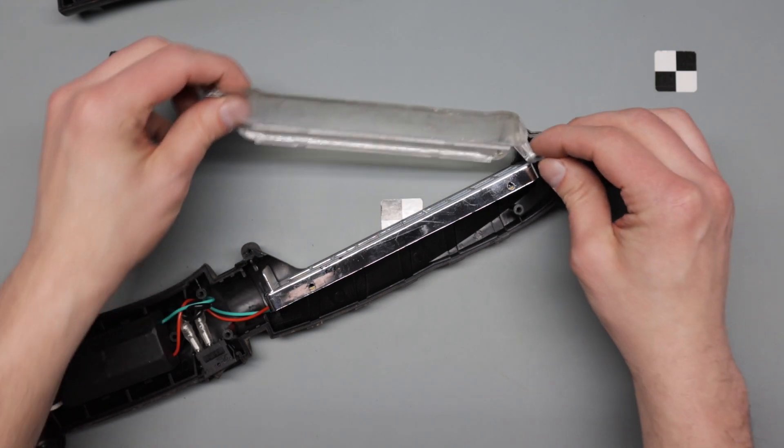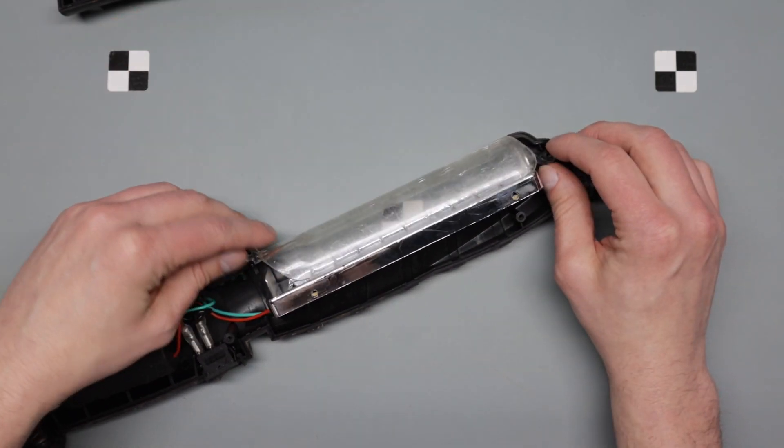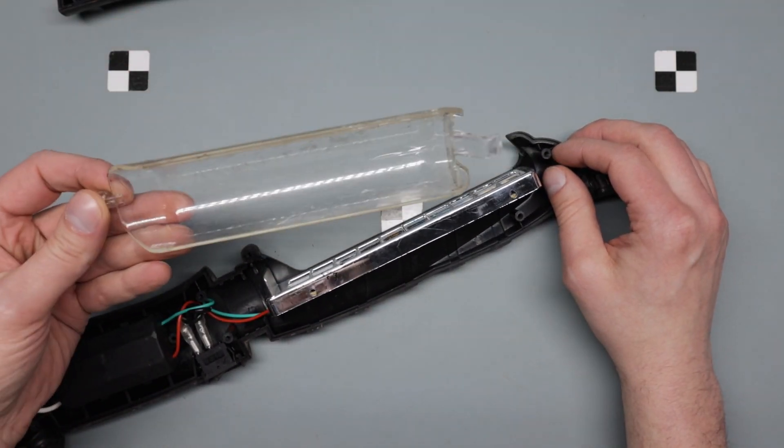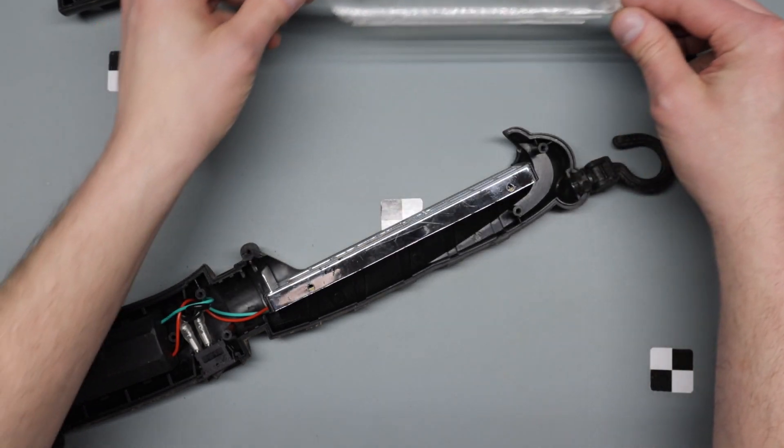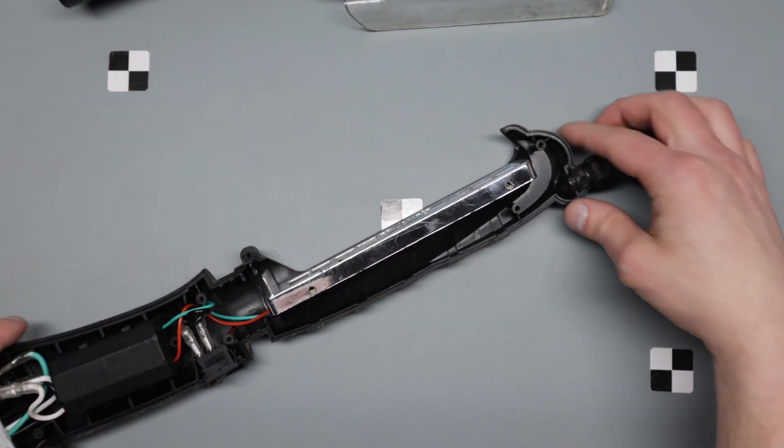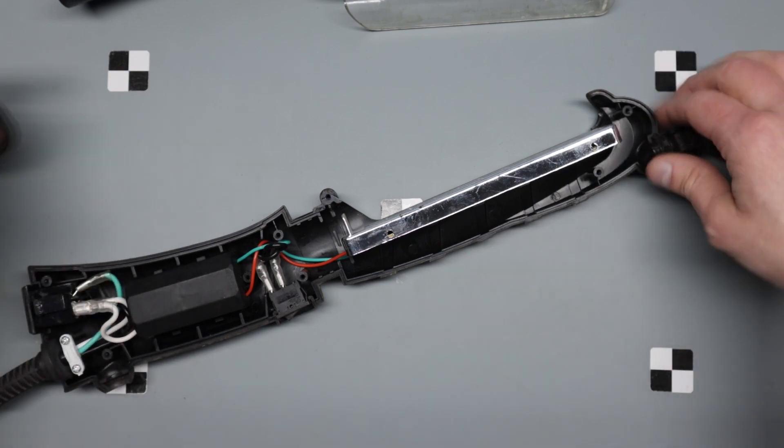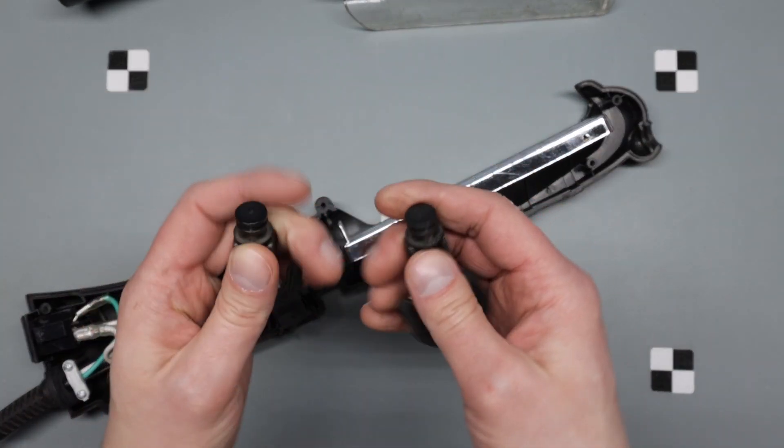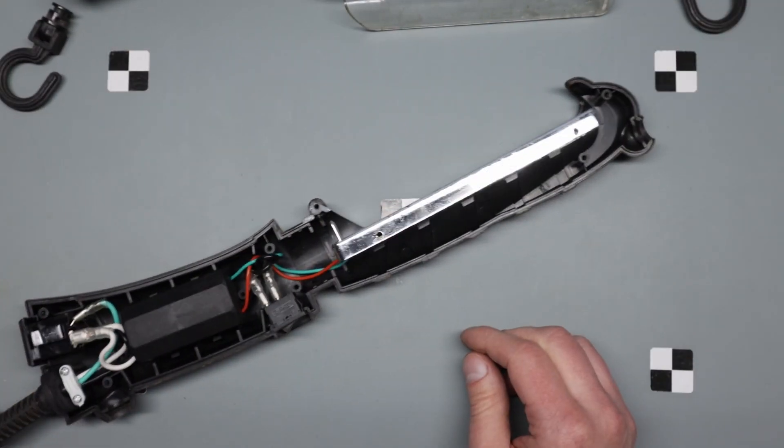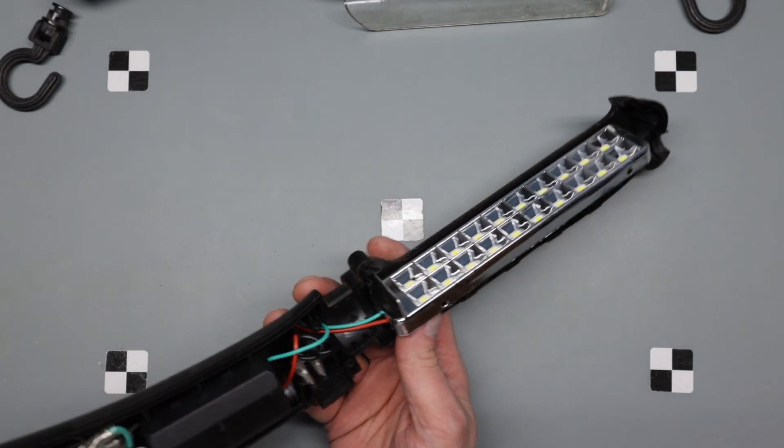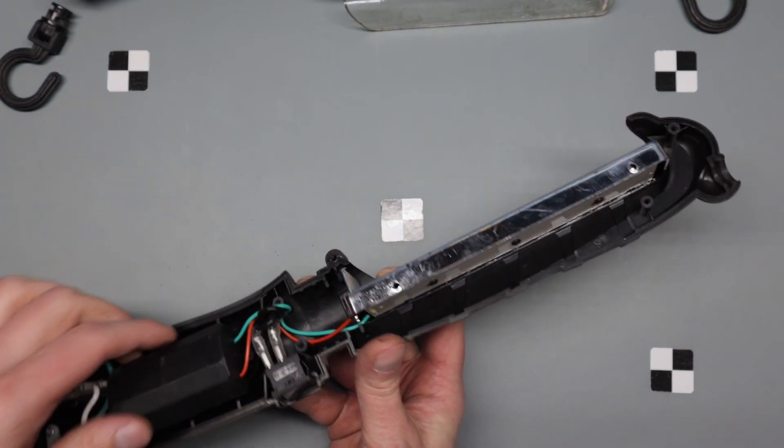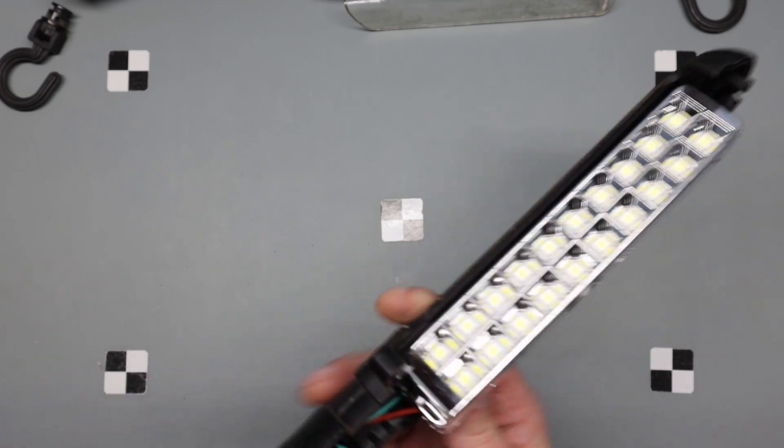Nothing really holding it together on the other side. There we go. Yeah, that thing is just hooked under there. That is an odd way of doing that. Okay, a couple of hooks. Well, am I going to be able to do anything with this? This is all potted, isn't it? No, okay.